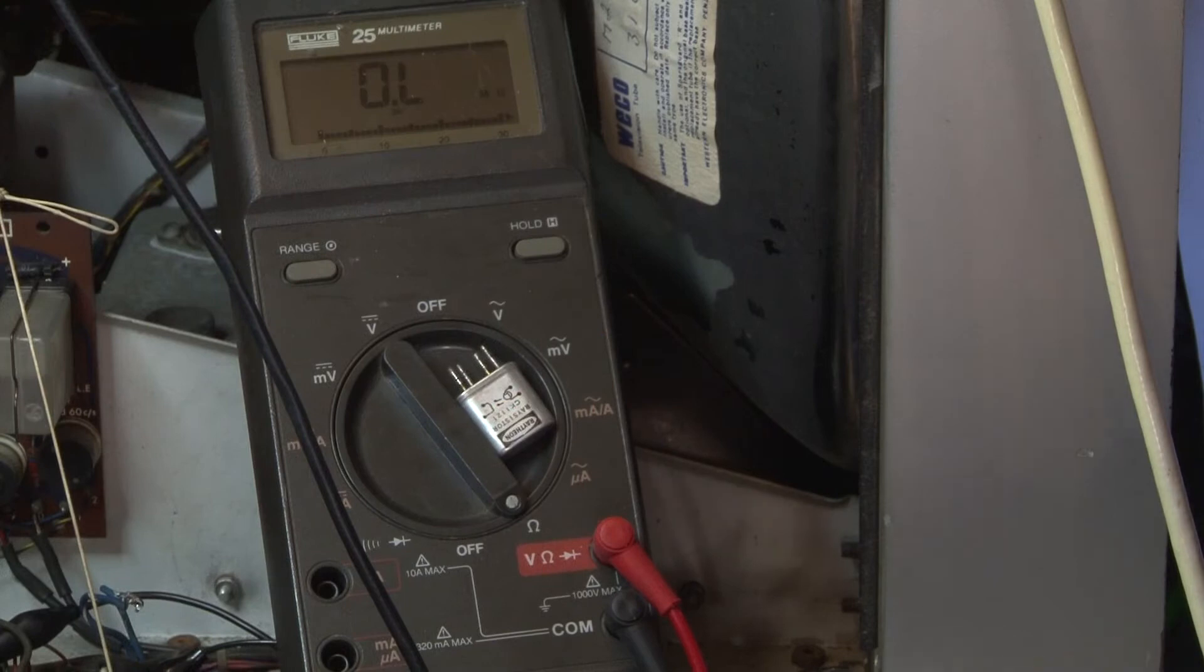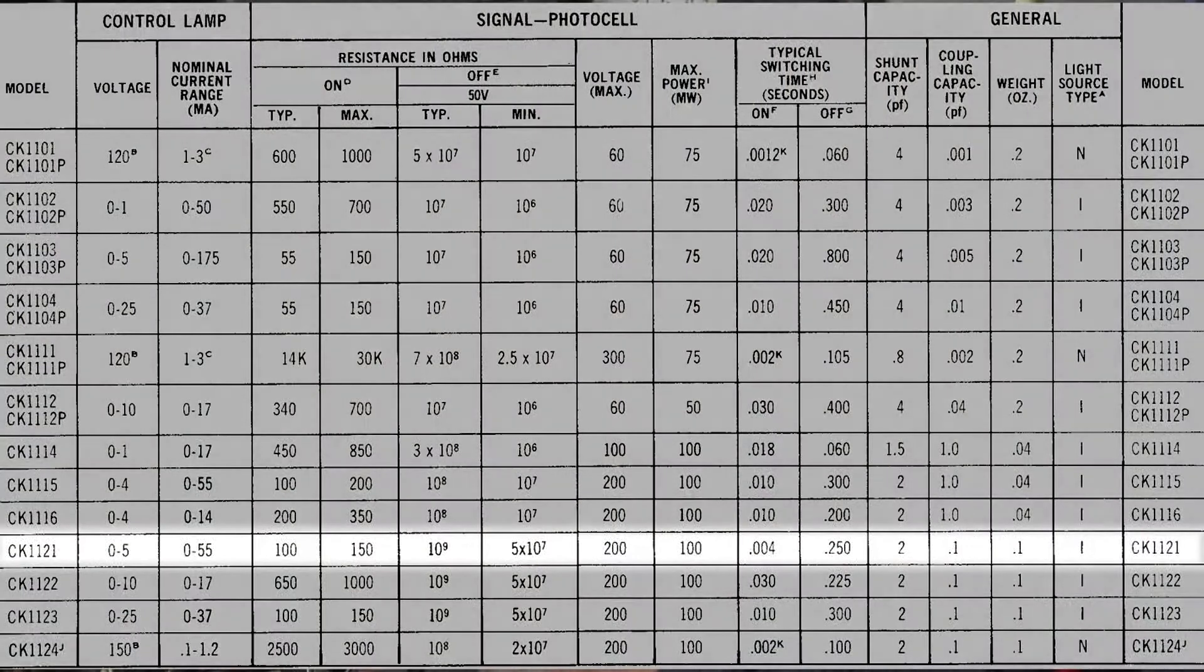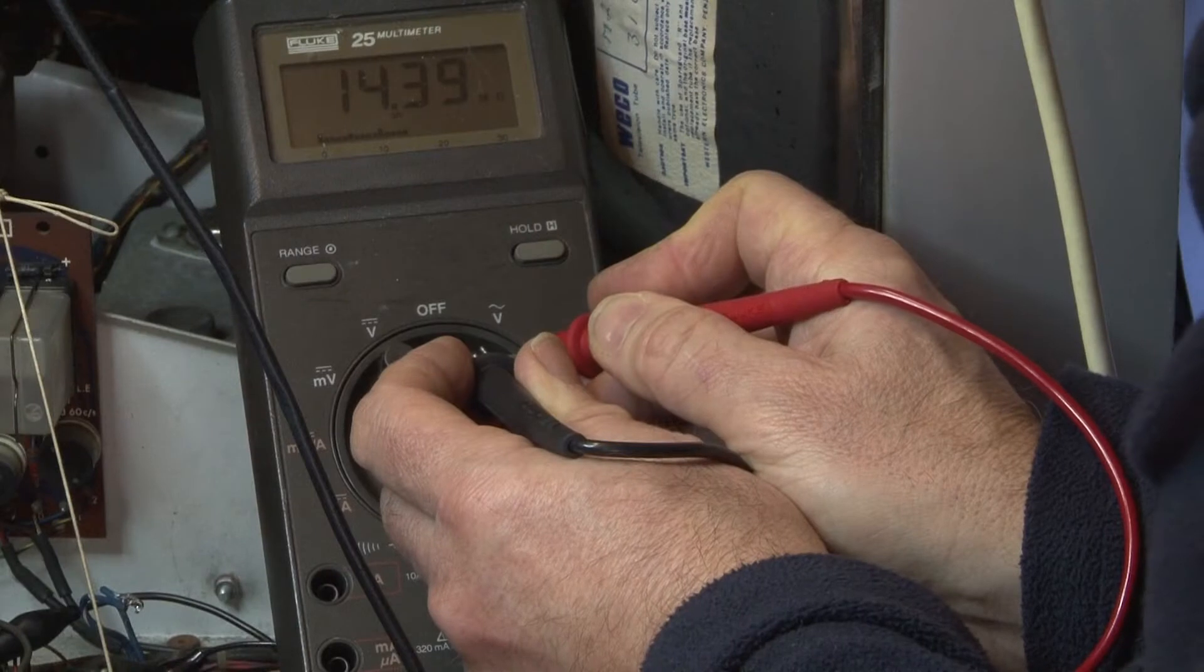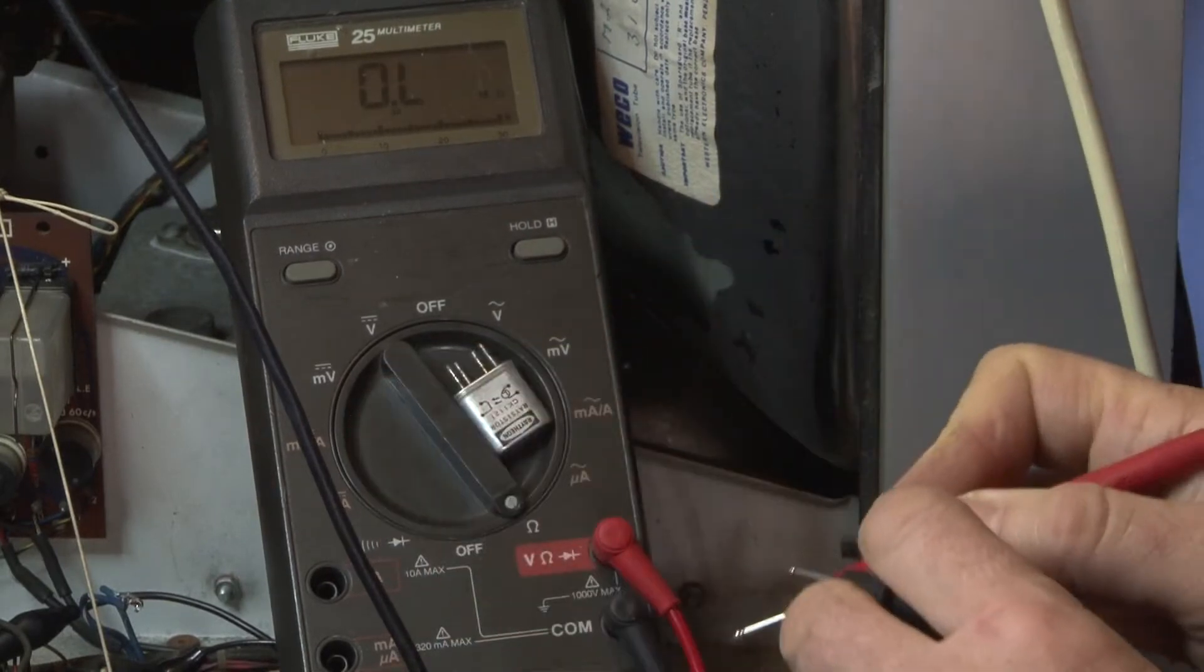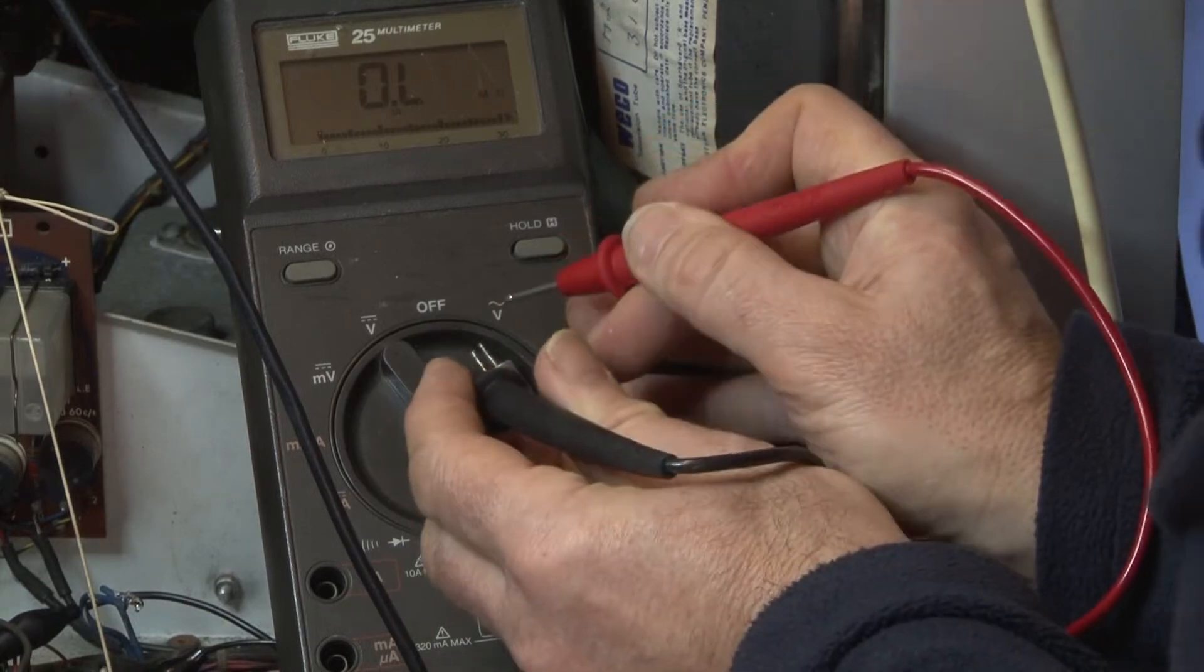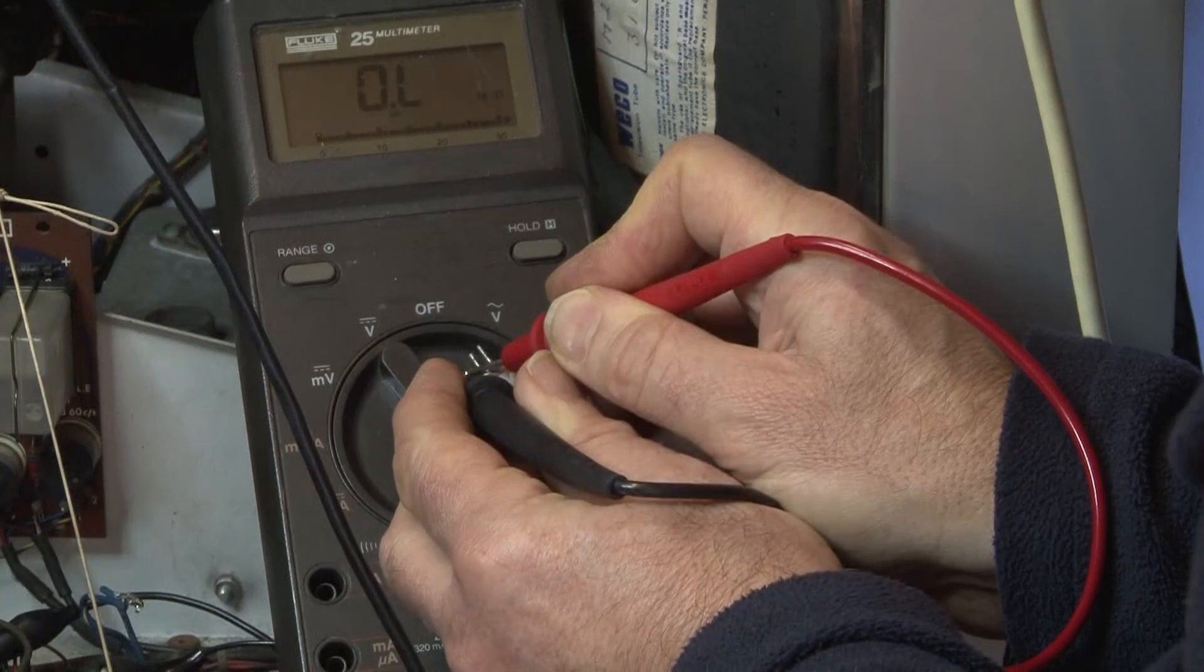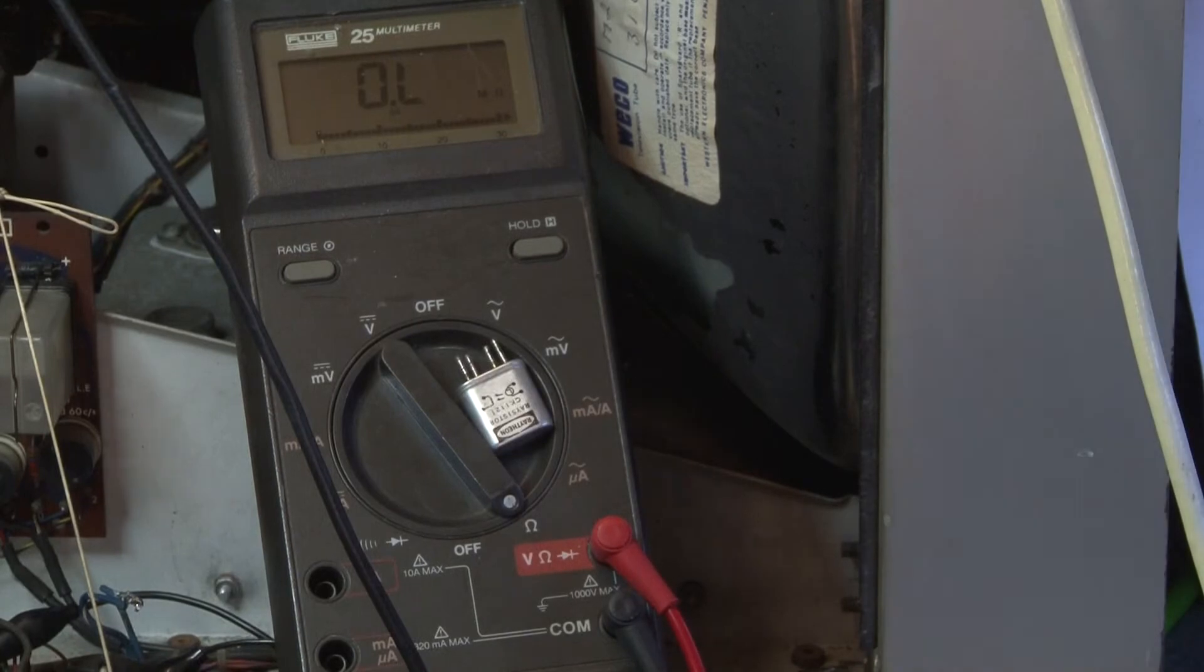Right, so there's the suspect component removed and we'll just measure the resistance first of all of the component and we're looking around about 12-15 megaohms there. So that's the light dependent resistor obviously with no light falling upon it. And the actual filament lamp is on the other two terminals there and totally open circuit. Many, many tens of megaohms there. So I think that's a fair assumption that that component has failed.